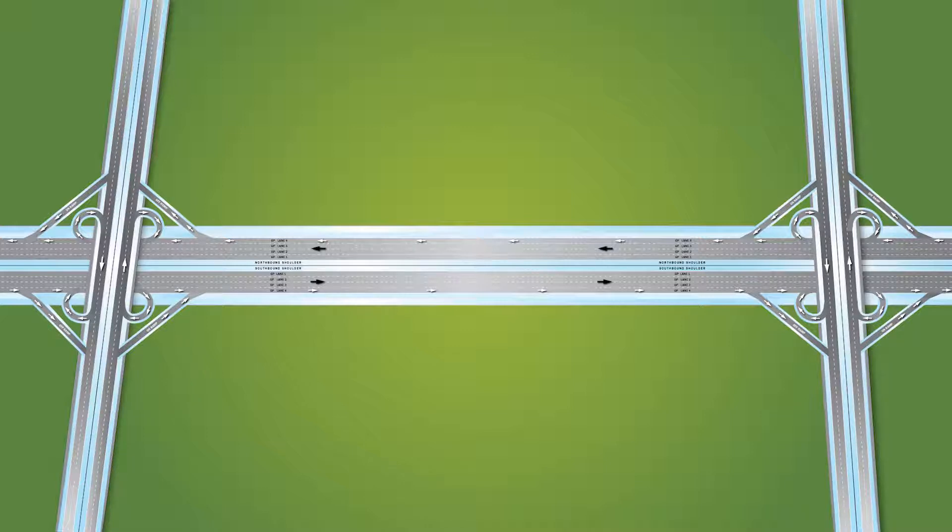Let's begin by looking at a stretch of freeway without auxiliary lanes to see what happens without them. As we see in this graphic, cars merge directly from an on-ramp into the outside general purpose lane. They also exit directly from this outside general purpose lane onto their off-ramps.